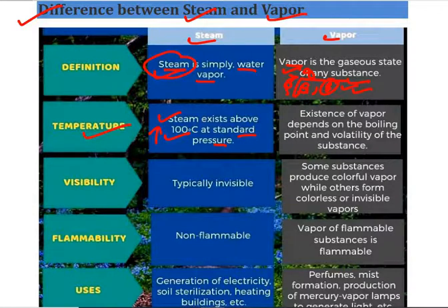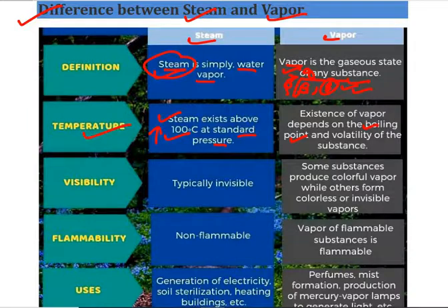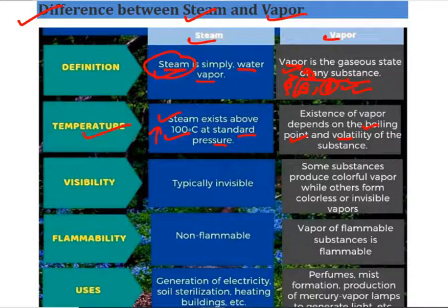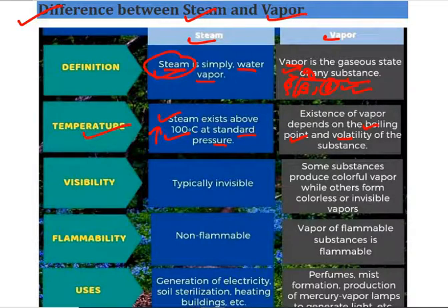The existence of vapor depends on the boiling point and volatility of the substance. Boiling point is the temperature at which any substance starts boiling. Volatility refers to how quickly any substance evaporates or vaporizes. The existence of vapor depends on boiling point and volatility, which we will study in detail in later lectures.